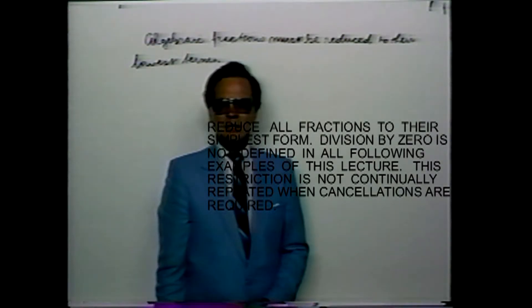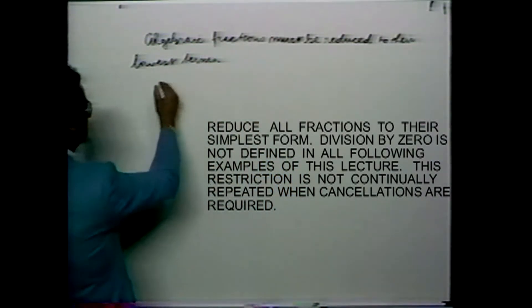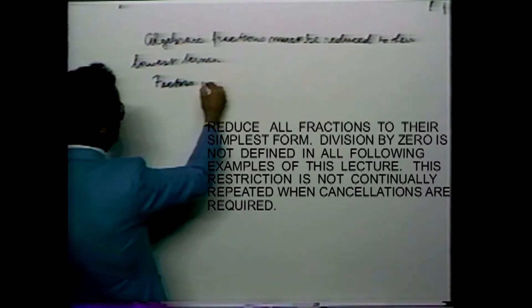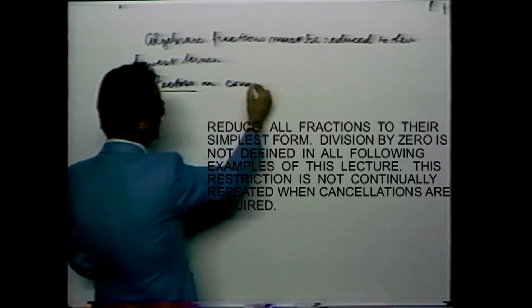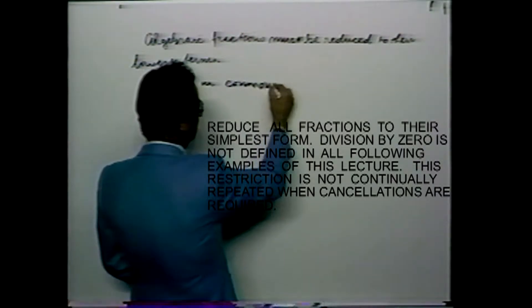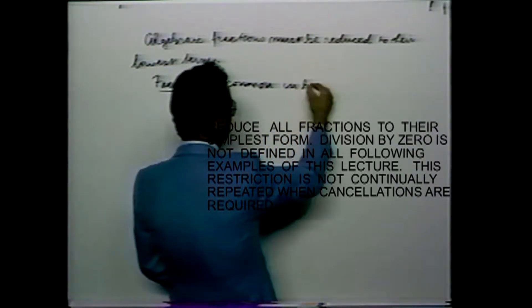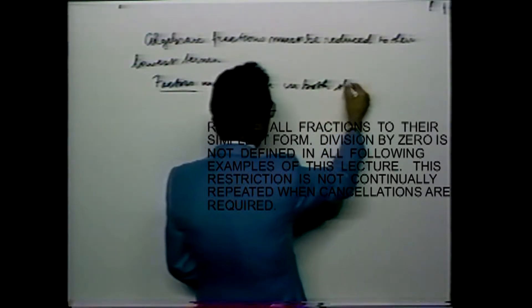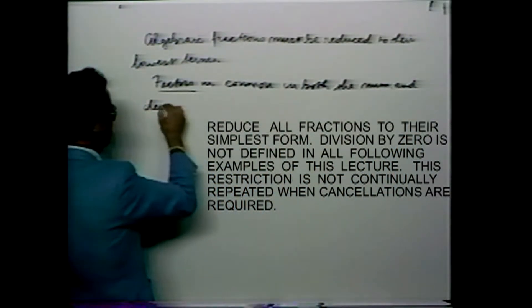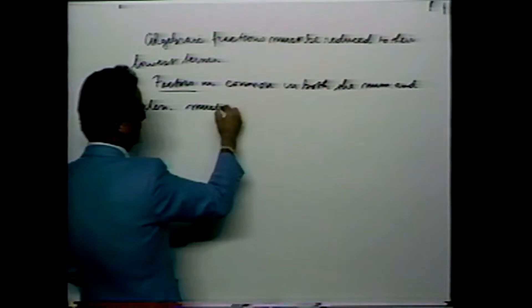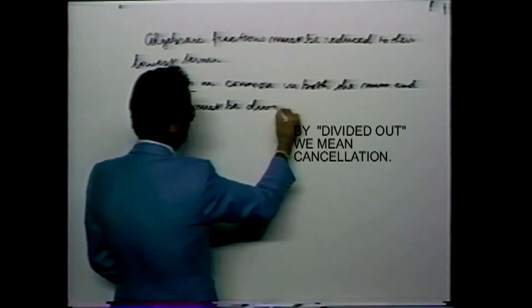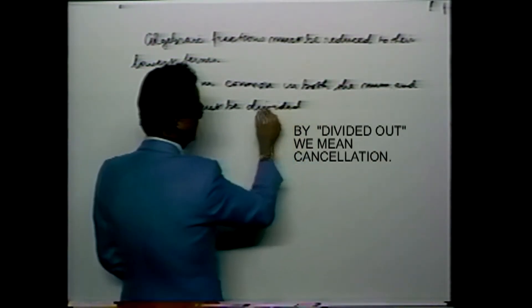Another expectation is that algebraic fractions must be expressed in their simplest form or reduced to their lowest terms. In other words, algebraic fractions containing factors in common between the numerator and denominator must be divided out of the expression.